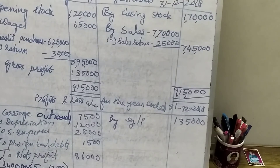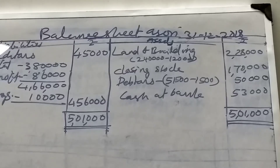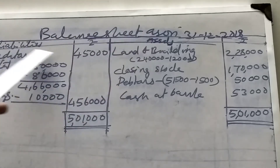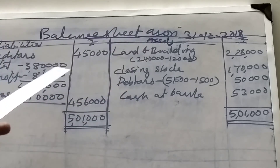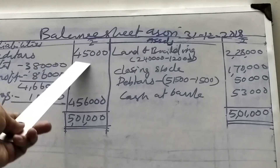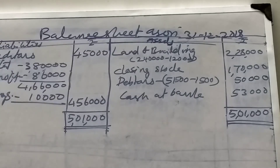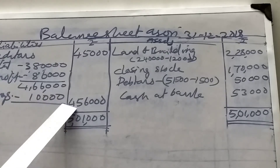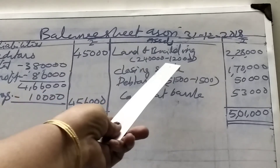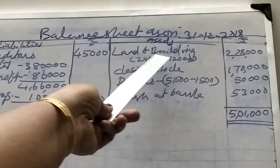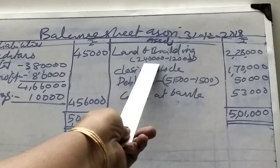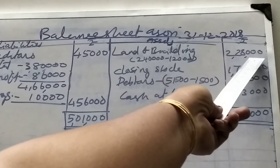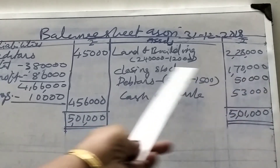Now we can prepare the balance sheet. Liability side and asset side. Creditors closing balance given in the question is 45,000. Capital: opening capital 3,80,000, add net profit 86,000, less drawings 10,000, gives 4,56,000. On the asset side: land and building 2,40,000 less depreciation 12,000 equals 2,28,000. Closing stock 1,70,000.